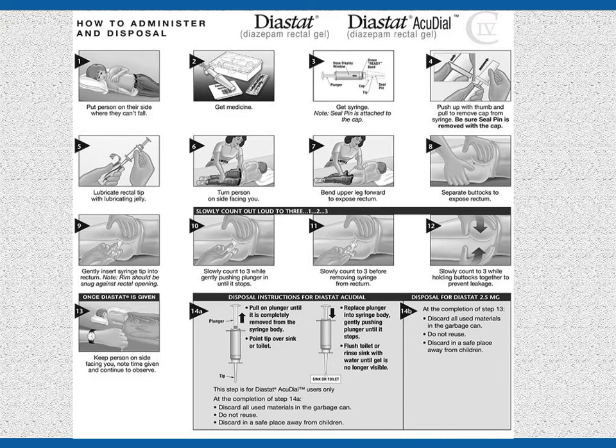Administering Diastat rectal gel. Step 1: Put the person on their side where they can't fall. Step 2: Get the medicine. Step 3: Get the syringe. Note the seal pin is attached to the cap. Step 4: Push up with your thumb and pull to remove the cap from the syringe. Be sure the seal pin is removed with the cap. Step 5: Lubricate the rectal tip with a water-soluble lubricating jelly.